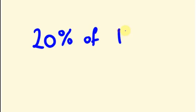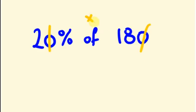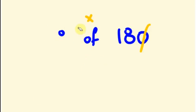So I am taking the question as 20% of 180. This time I am having one zero on this side and one zero on that side. By cancelling this zero and this zero, I am going to multiply the two remaining values. So 2 into 18 is 36. Therefore 20% of 180 is 36.